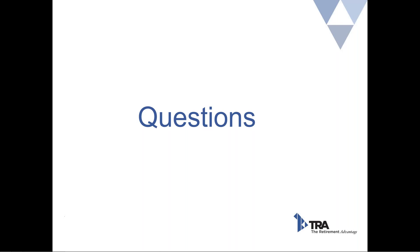Next question: what if I can't reach Sharon or Teresa and have an urgent question? With TRA being highly departmentalized, we do have a fully staffed client relationship management team able to handle any and all plan-related questions. If you have an urgent question and can't reach Sharon or Teresa, you may contact our main office line at 888-872-2364 and ask to speak with a client relationship manager.